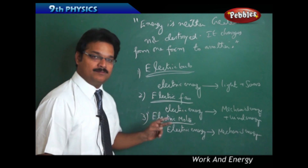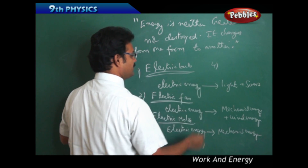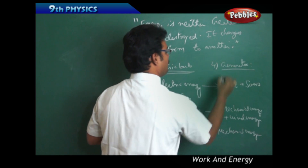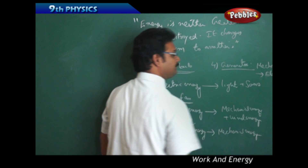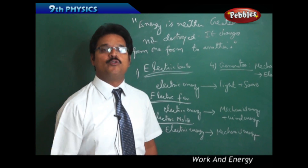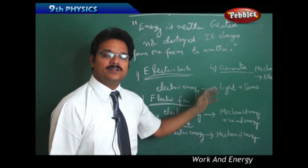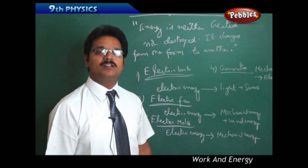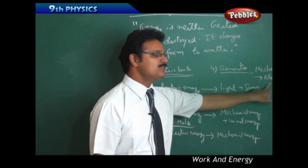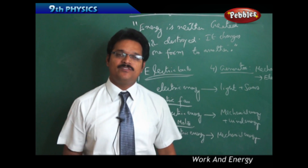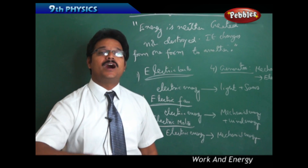Do you know there is another machine which works entirely opposite to an electric motor? That is a generator. The generator converts mechanical energy to electrical energy. When there is a power cut at your home, you use generators — and these generators convert mechanical energy into electrical energy. AC generators and DC generators all follow the same conversion: mechanical to electrical. So ultimately, if you say energy is created, you are wrong; if you say energy is converted from one form to another, you are correct.